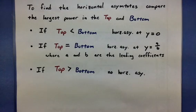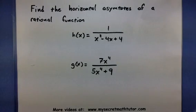So, let's use this information to find our asymptotes. Okay, so for the first one, I want to look at the power in the top and the power in the bottom. Now, it looks like there is no power in the top.